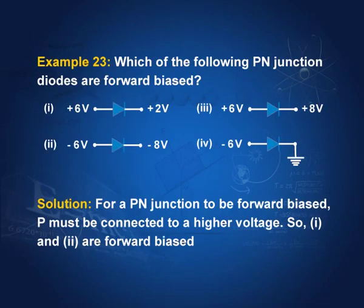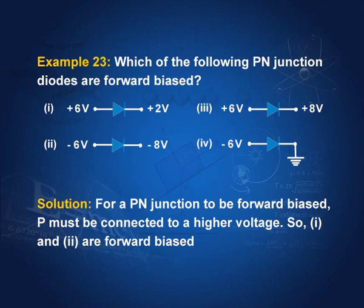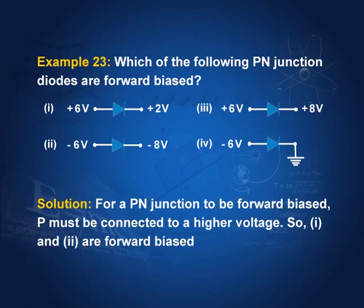For a PN junction to operate, the P side must always be at a higher potential than the N side. In four given cases: minus 6 vs minus 8 — minus 6 is higher, so it works; plus 6 vs plus 8 — the P side voltage is lower, so it does not work; 0 vs minus 6 — minus 6 is lower than 0, so the junction does not work either.